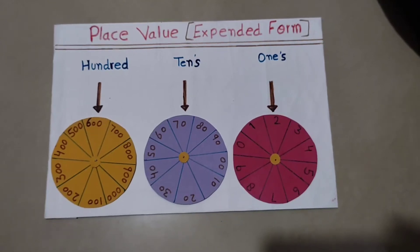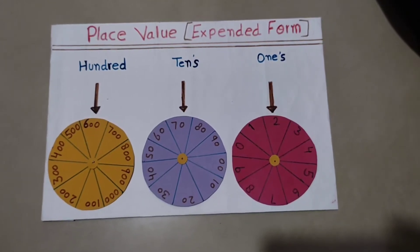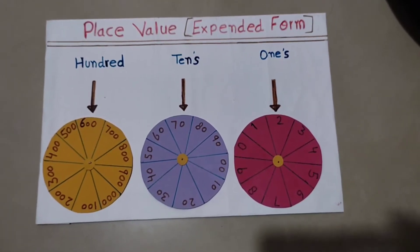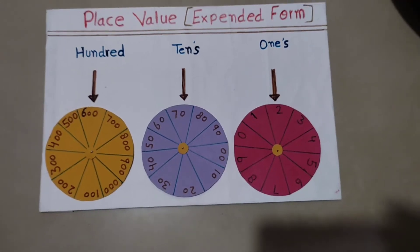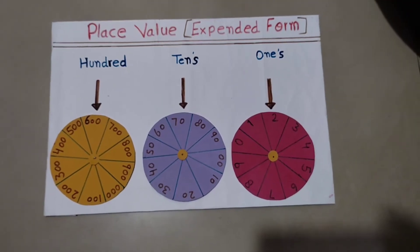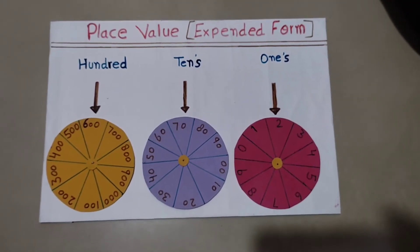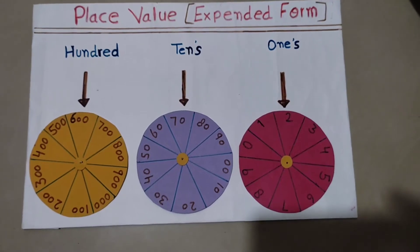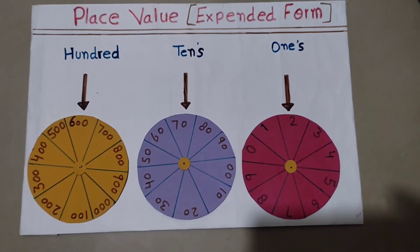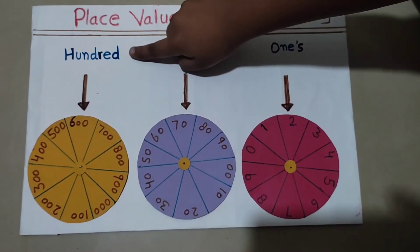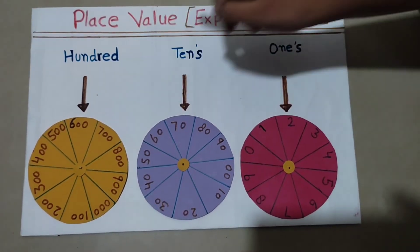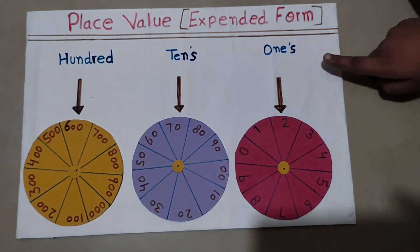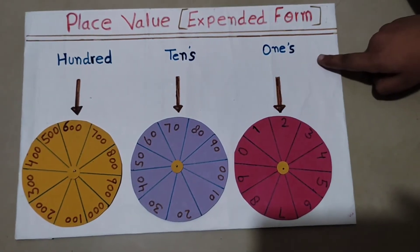Hello everyone, this is an expanded form chart. We can learn expanded form through this chart. This has three wheels: one is for the 100th place, one is for the 10th place, and one is for the 1st place.